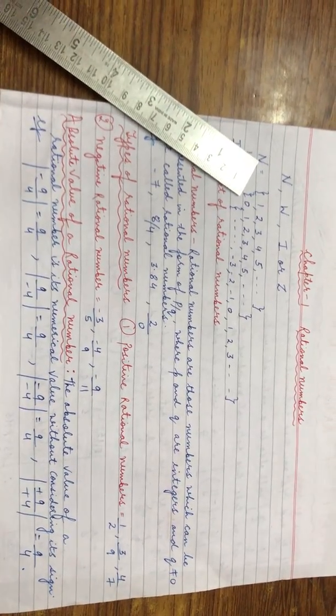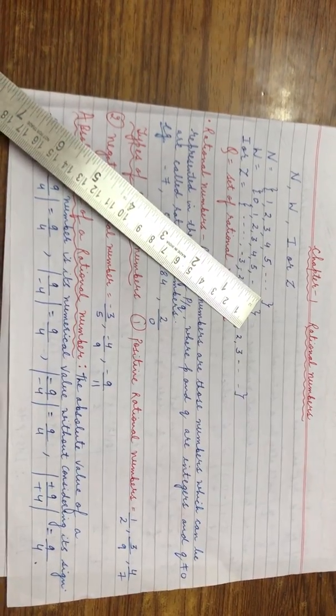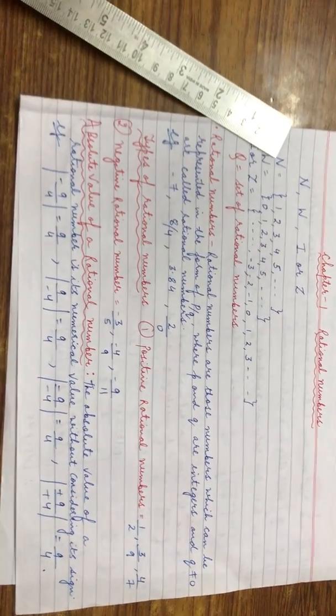Natural numbers are numbers which start from 1. The set of natural numbers is represented by capital N.